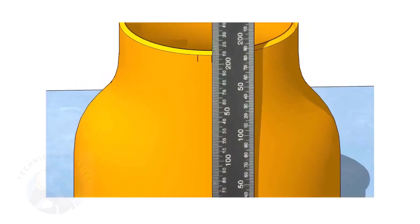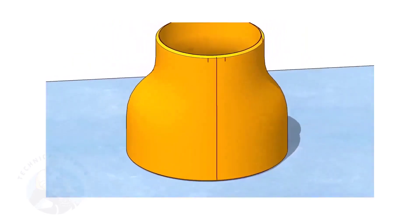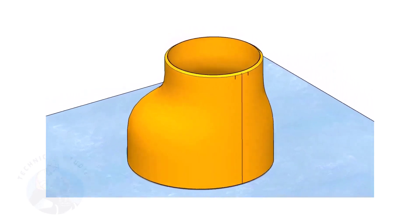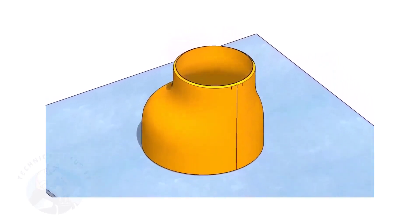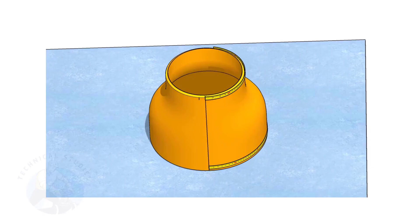In this video, I will show you the method of fitting an eccentric reducer to a pipe that is already fitted to a flange. But this method is applicable for all the fittings.